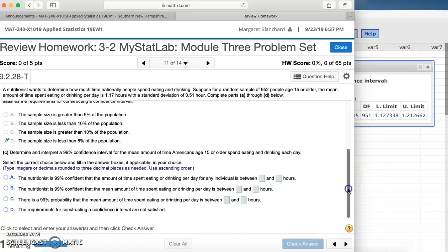And then it brings up this table, so we have our lower limit and our upper limit. Now we need to come down here and find out which option matches our interpretation of a confidence interval. Here we have: the nutritionist is 99% confident that the amount of time spent eating or drinking per day for any individual is between blank and blank. We have: the nutritionist is 99% confident that the mean amount of time spent eating or drinking per day is between blank and blank.